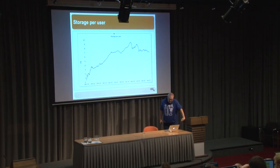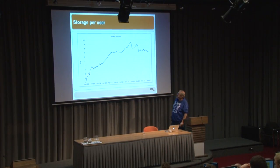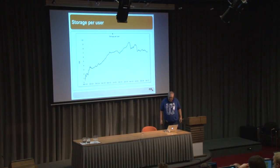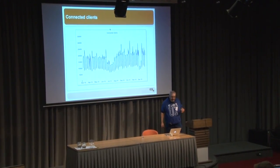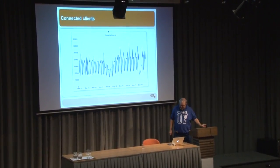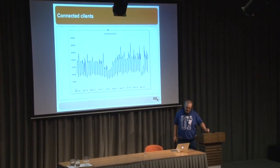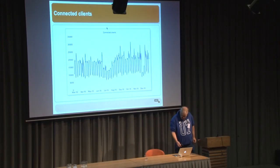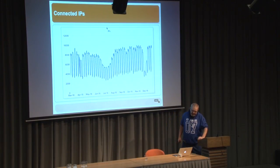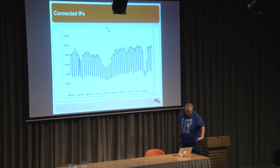The amount of storage per user also shows those dips due to our manual intervention. At the moment, on average, everybody uses roughly seven gigabytes. As for connected clients — where a client is a unique combination of user, IP, and agent — we're at somewhere between twenty and thirty thousand each day. The number of unique IPs connecting is roughly close to ten thousand different IPs every day.